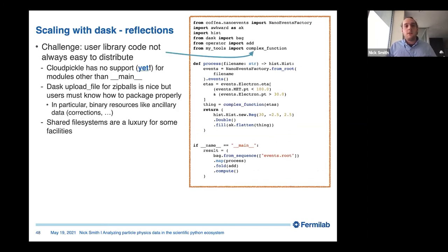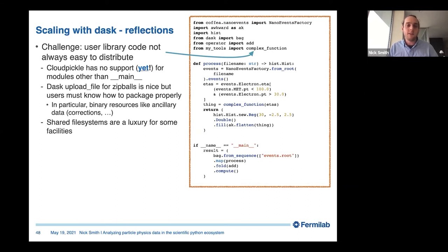Another challenge is user library code. If someone wants to put a complex function in their Python module and import it, it becomes a pain point. CloudPickle is soon going to have support for cloud-pickling modules. Dask has a built-in upload file for zip balls, which is slick because it uploads and reloads the module in the runtime — but then users have to know how to make a proper Python package, including loading extra binary resources. Some people are lucky to have shared file systems where none of this matters, but maintaining a distributed shared file system is a challenge that not all facilities have.